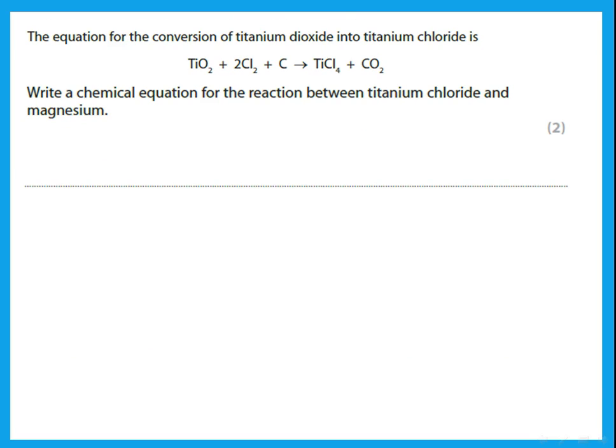The equation for the conversion of titanium dioxide into titanium chloride is given. Write a chemical equation for the reaction between titanium chloride and magnesium. Titanium chloride is TiCl4 (from the equation above). TiCl4 plus magnesium gives magnesium chloride plus titanium. Magnesium has a valency of 2, so MgCl2 — put 2 in front of MgCl2 to balance the equation.